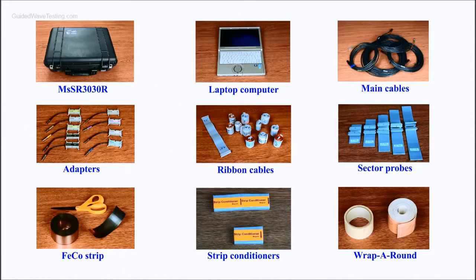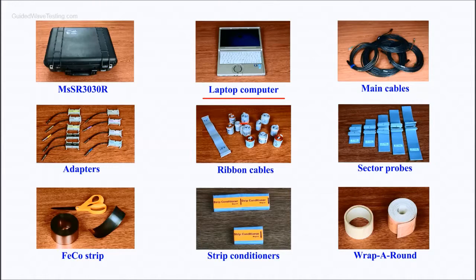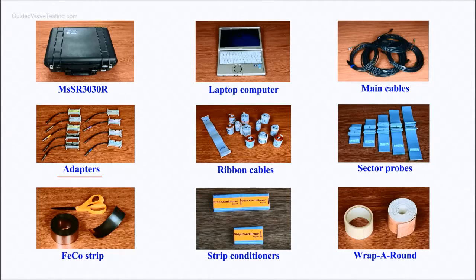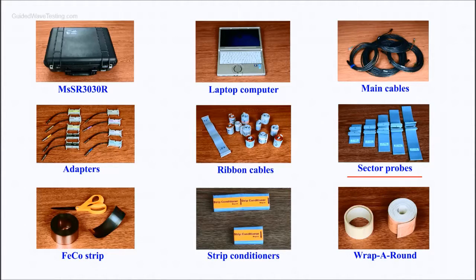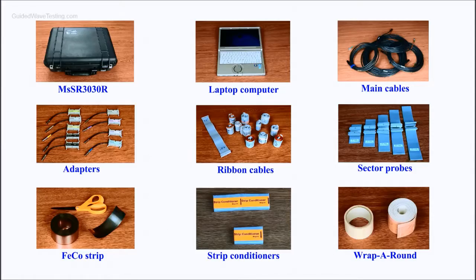the MS system uses 9 main components: an MSS R3030R equipment, a laptop computer, a main cable, an adapter, a ribbon cable, a sector probe, an iron cobalt strip, a strip conditioner, and a Rev-round.